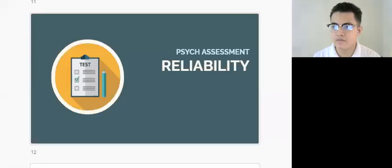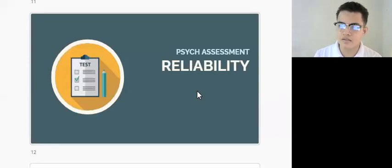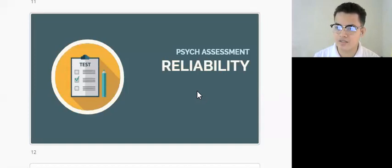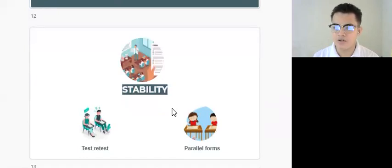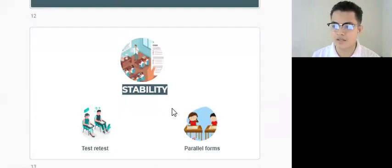Hello everyone. In the previous lesson we have learned about objectivity as a characteristic of a test — to create standard procedures for test administration, scoring, and interpreting test results, while trying to lessen any unnecessary intervention from the test score. We also discussed validity as one of the characteristics of a good test, which refers to the ability of a test in determining items which are supposed to represent the characteristics that we are trying to measure.